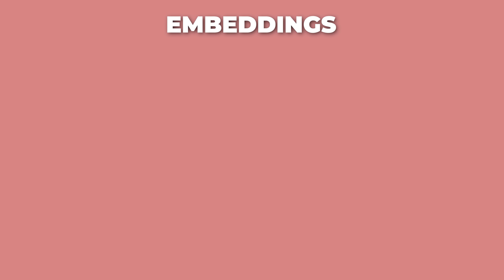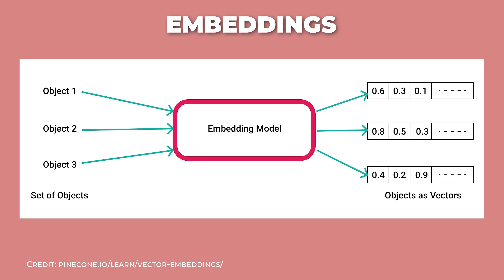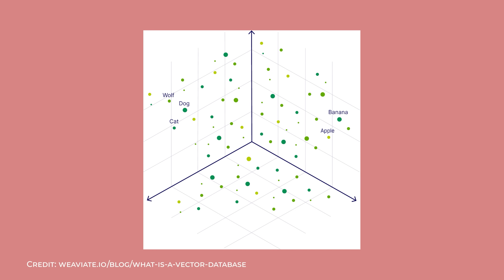RAG depends on something called embeddings. An embedding turns text into a list of numbers, where similar meanings end up close together mathematically. So 'car' and 'automobile' would have very similar lists of numbers, even though they're very different words. This lets you search by meaning, not just exact word matches. These embeddings get stored in a vector database, which is a database that's really good at quickly finding the most similar embeddings to your question. When you ask something, the system finds the closest matching documents and feeds them to the model along with your question.